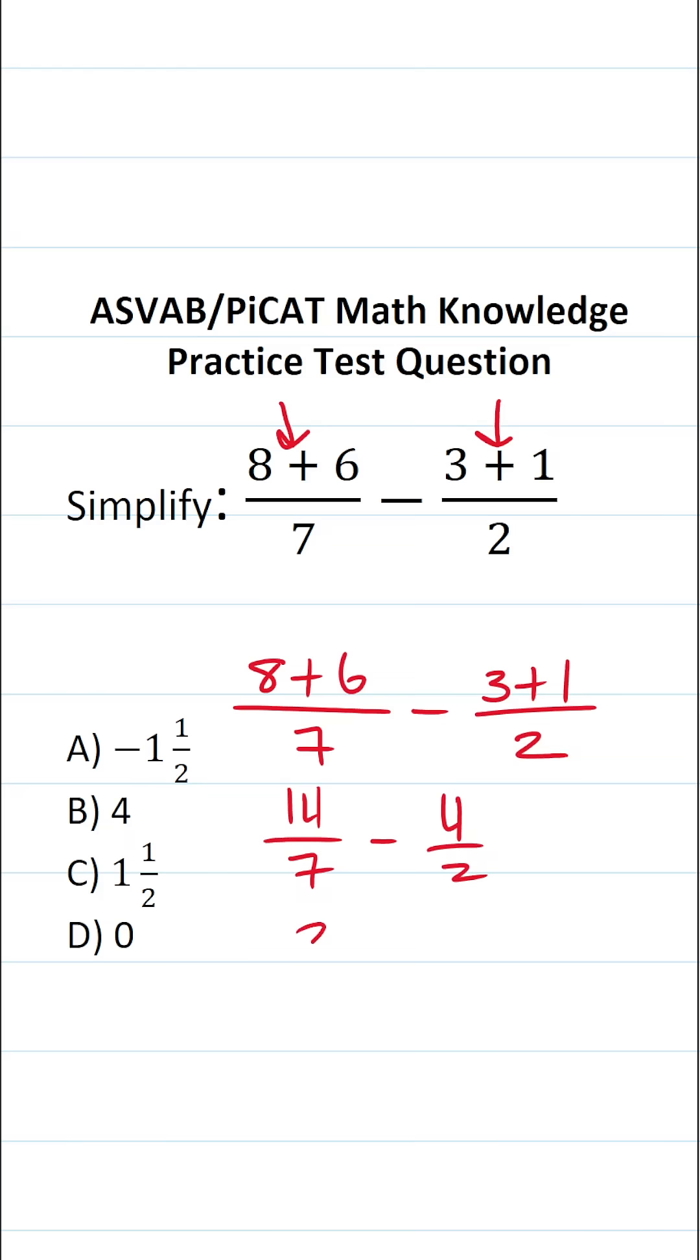14 divided by 7 is going to be 2. 4 divided by 2 is 2. 2 minus 2 is 0. So when we simplify this expression, our result is D, 0.